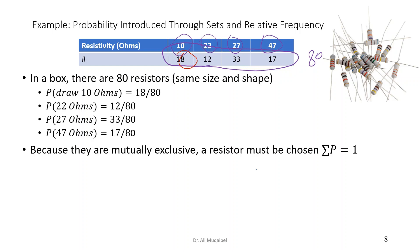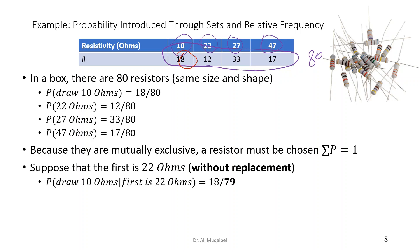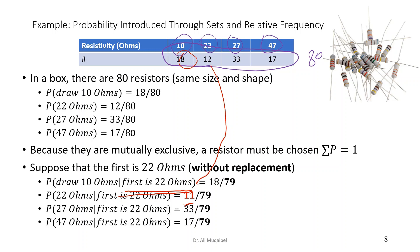Now if you draw another resistance without replacement, which means you already have taken one outside, then the new probabilities become 18 out of 79. 80 becomes 79 because there is one missing resistance that's already 22 ohm. We are told that given that condition that the first one is 22 ohm. Now be careful, the probability of having 22 will be 11 now, because we have already drawn one before which is 22 ohms. For the remaining: 33 over 79 and 17 over 79.